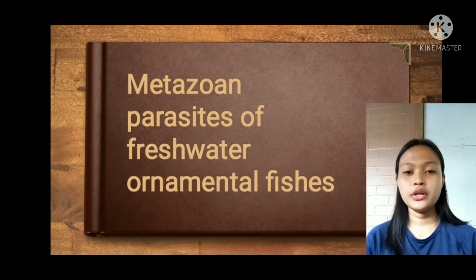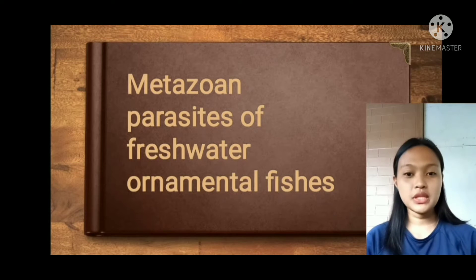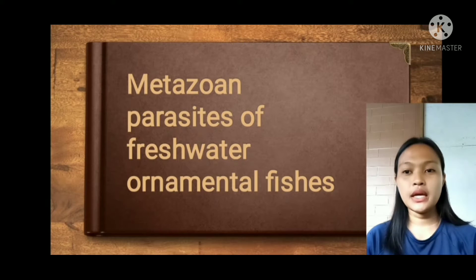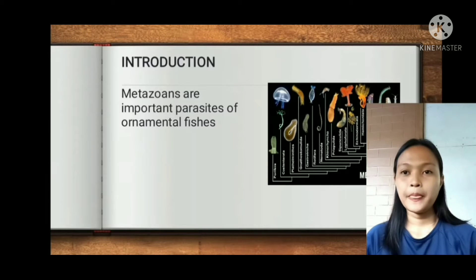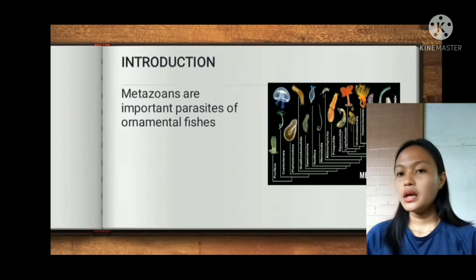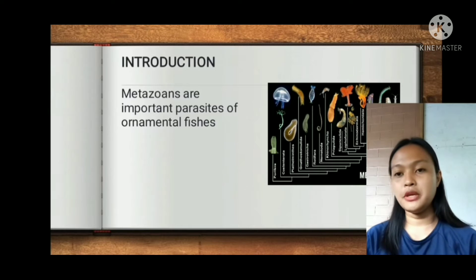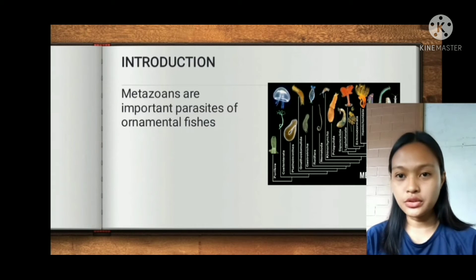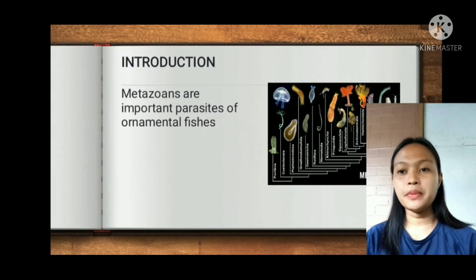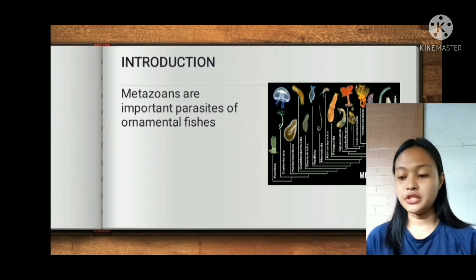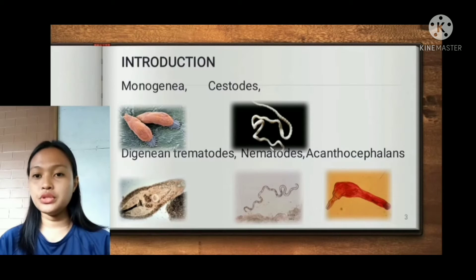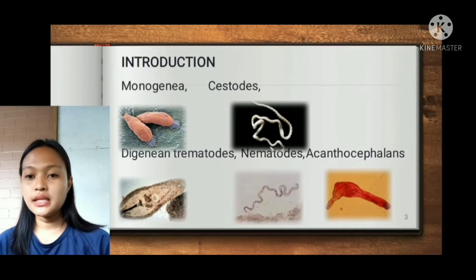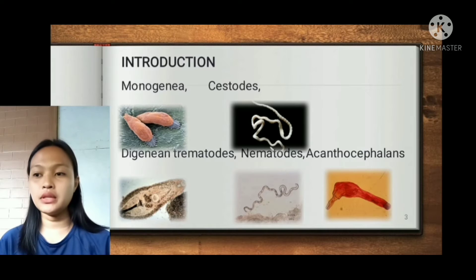The title of our PowerPoint presentation is 'Metazoan Parasites of Freshwater Ornamental Fishes.' Parasitic diseases in farmed fish may be caused by agents from different zoological groups. The metazoans are important parasites of ornamental fishes. This includes monogeneans, cestodes, digeneans, trematodes, nematodes, and also the acanthocephalans.